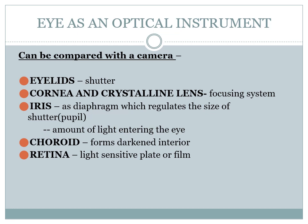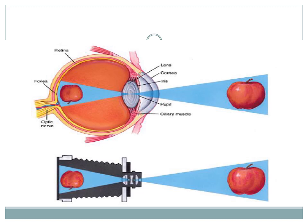The eye is an optical instrument which can be compared with the camera. The eyelids act as a shutter, the cornea and crystalline lens act as the focusing system of the camera. The iris acts as a diaphragm which regulates the size of the aperture and the amount of light entering the eye. The choroid acts as a darkened interior and the retina as the light-sensitive film. This diagram shows the analogous image formation in the eye and camera.